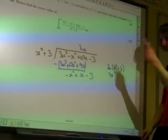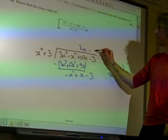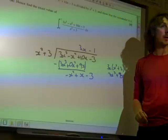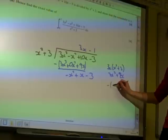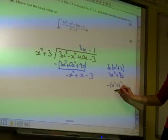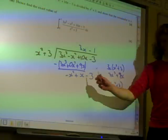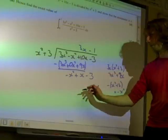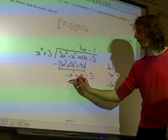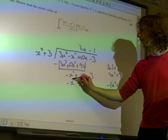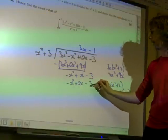We say, what do we multiply x squared by to get minus x squared? The answer is minus 1. If we do that multiplication - we don't need to work this out - we get that. Again, we're careful to line up our columns. We've got minus x squared, 0x's, and minus 3 there.